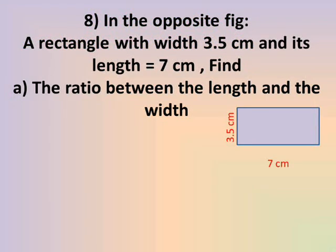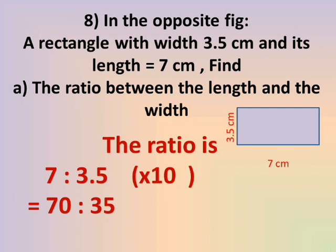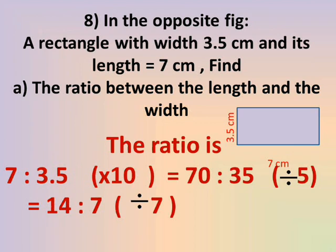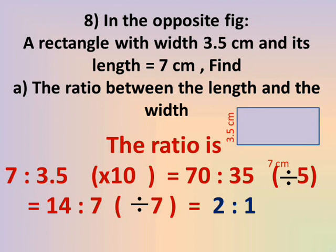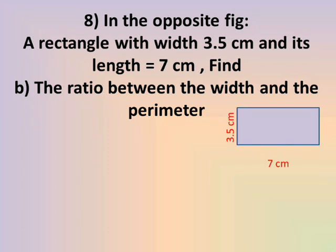Number 8: In the figure, a rectangle with width 3.5 cm and length 7 cm. Find number A — the ratio between the length and the width. That is 7 to 3.5. Since 3.5 is a decimal, multiply both by 10: 7 × 10 = 70 and 3.5 × 10 = 35. Then 70 ÷ 5 = 14 and 35 ÷ 5 = 7. Then 14 ÷ 7 = 2 and 7 ÷ 7 = 1. So the ratio is 2 to 1.